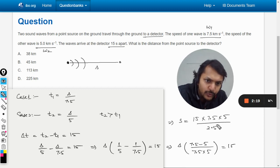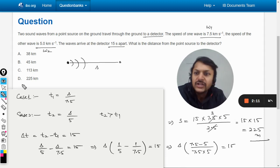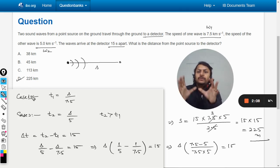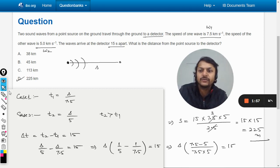It becomes 3, so overall it is 15 × 15, which equals 225 km. Yes, the answer is D. It's simple calculation. You can use whatever method you want. The answer is 225 km.